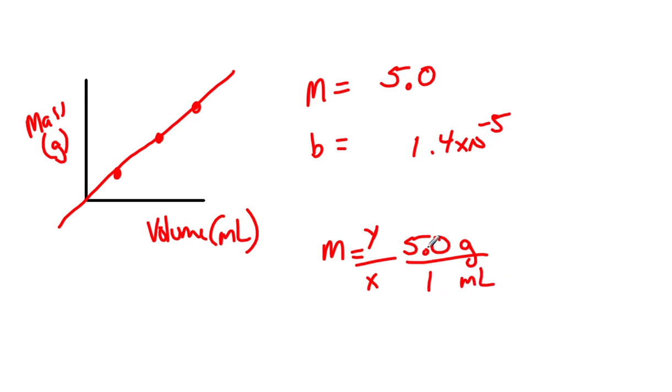Now 5.0 is the same as saying 5.0 over 1. So this is your slope, 5.0 grams for every 1 milliliter. So if you go over 1 milliliter you're expected to go up 5 grams. You go over 2 milliliters you're expected to go up 10 grams. It's a ratio. It's a conversion factor. We can use this in dimensional analysis problems.